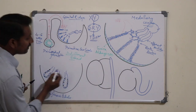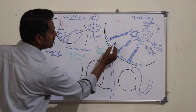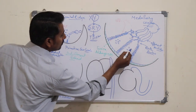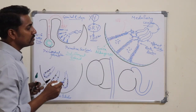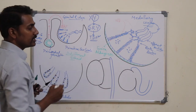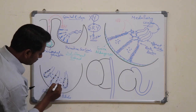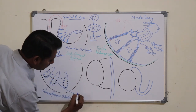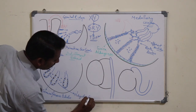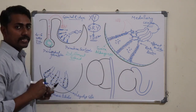The surrounding mesenchyme will form Leydig cells, which produce the hormone testosterone.